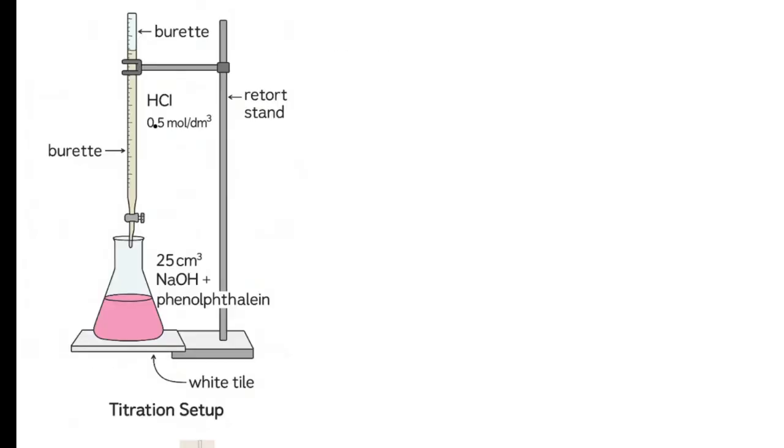Here you can see the practical setup of a titration experiment. There's a burette filled with hydrochloric acid. This we take of known concentration. It's pretty easy, it's from the lab. So in this example I've taken 0.5 mole per cubic decimeter concentration hydrochloric acid and then you fill it up to the top mark. It is clamped vertically to a retort stand.